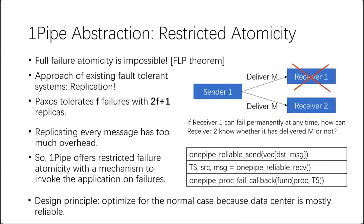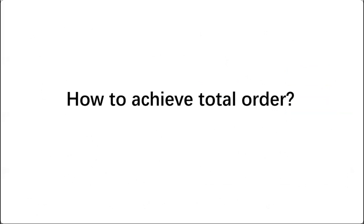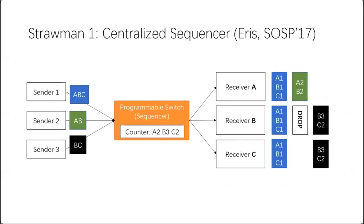Replicating every message would introduce too high an overhead, but we can apply the design principle of optimizing for the normal case, since data centers are mostly reliable. The first prior approach is ARIS, which uses a programmable switch as a centralized sequencer keeping a counter for each receiver. When a receiver detects a gap in its sequence number, it knows a message is lost, and a failure coordinator uses a traditional consensus algorithm. However, the major problem is that the switch becomes a centralized bottleneck. A second approach synchronizes physical time on senders, tagging messages with timestamps and computing minimum timestamps at receivers — but this also has scalability drawbacks.